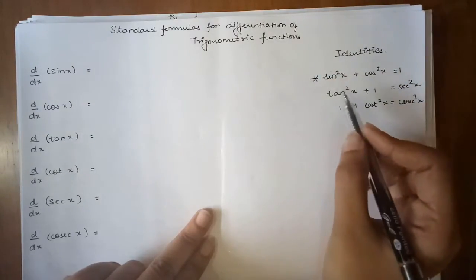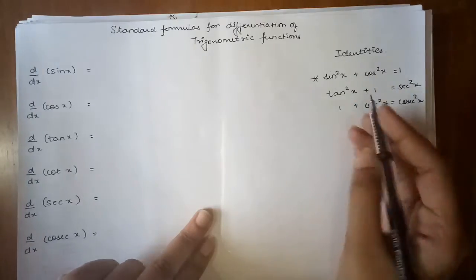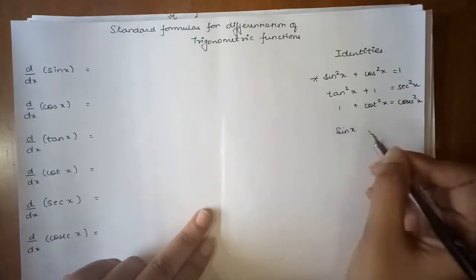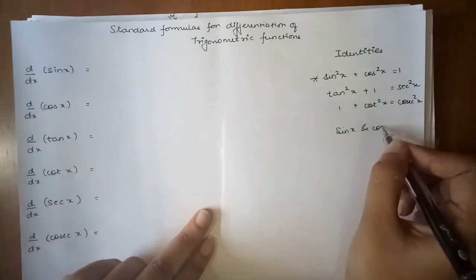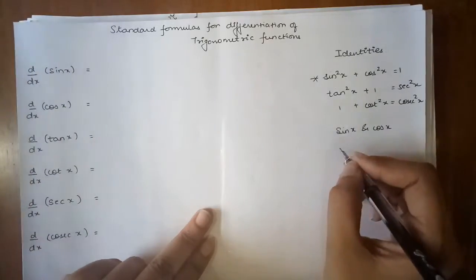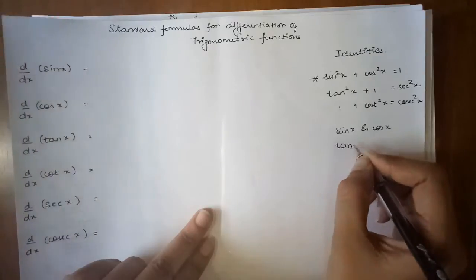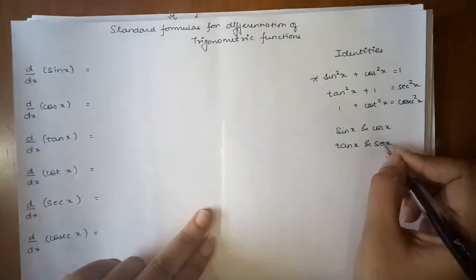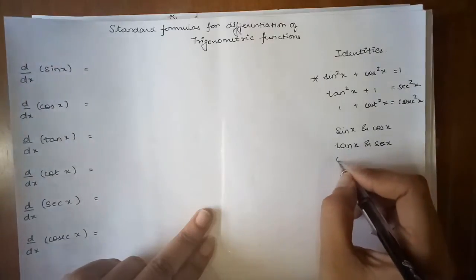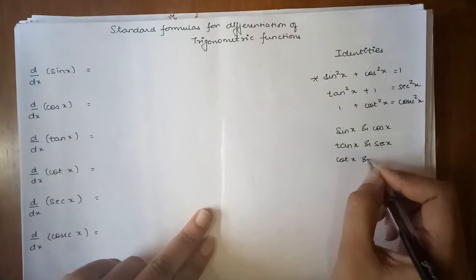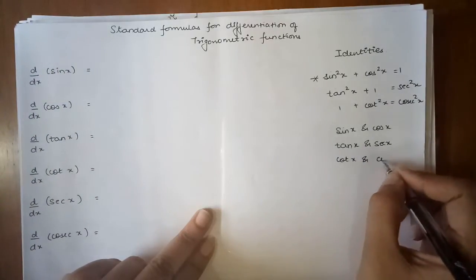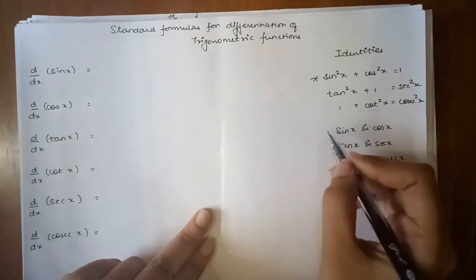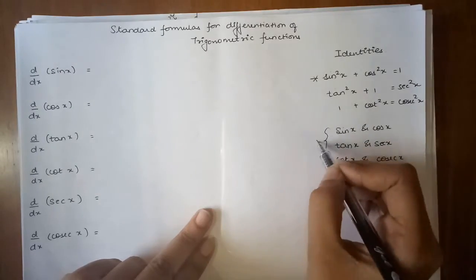The reason why I have revised all of these is that we can see there is a relation between sin x and cos x, similarly there is a relation between tan x and sec x, and there is a relation between cot x and cosec x.